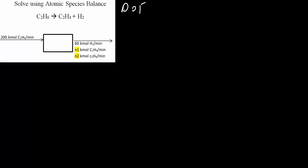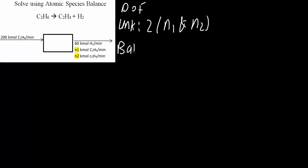So now let's solve. First, we need to get the degree of freedom using atomic species. How many unknowns do we have? We have two unknowns, and they are N1 and N2. And how many atomic species balances can we write? We can write two — minus two — because they are C and H, carbon and hydrogen. With that, we know that this problem is solvable since the DOF is equal to zero.